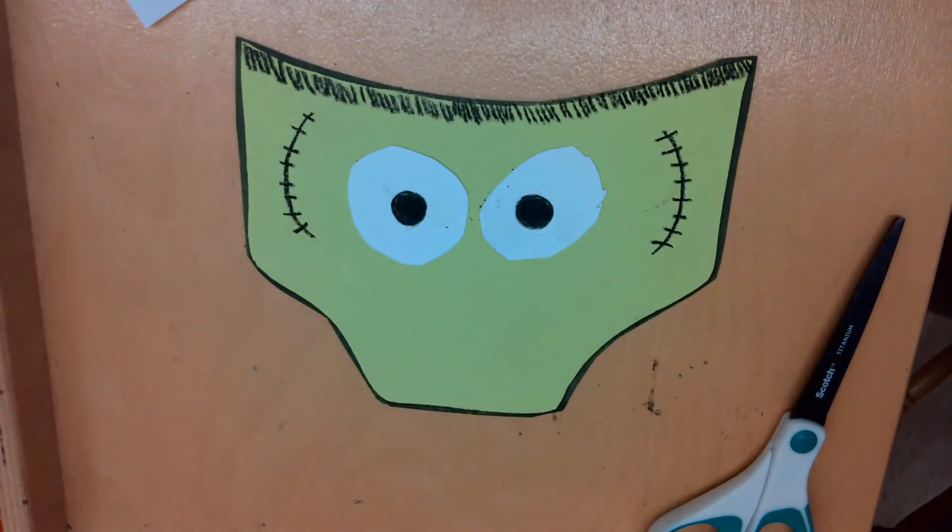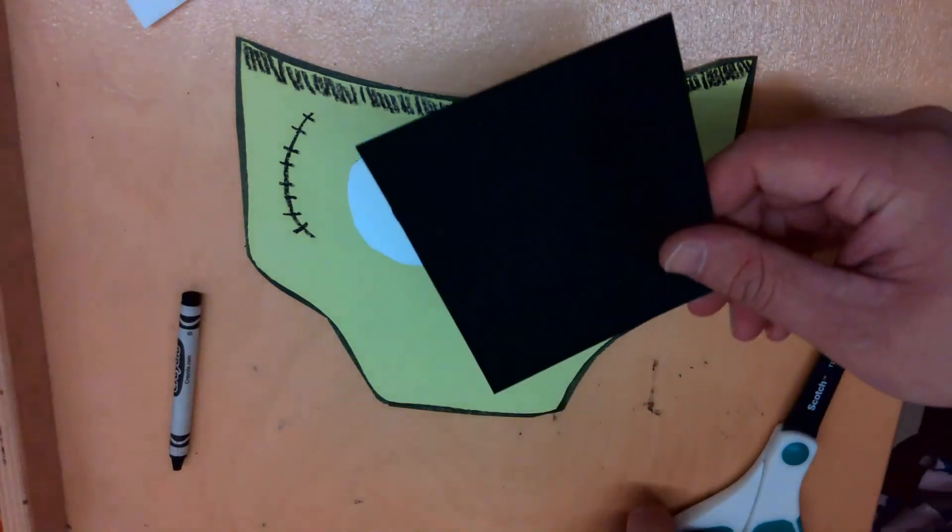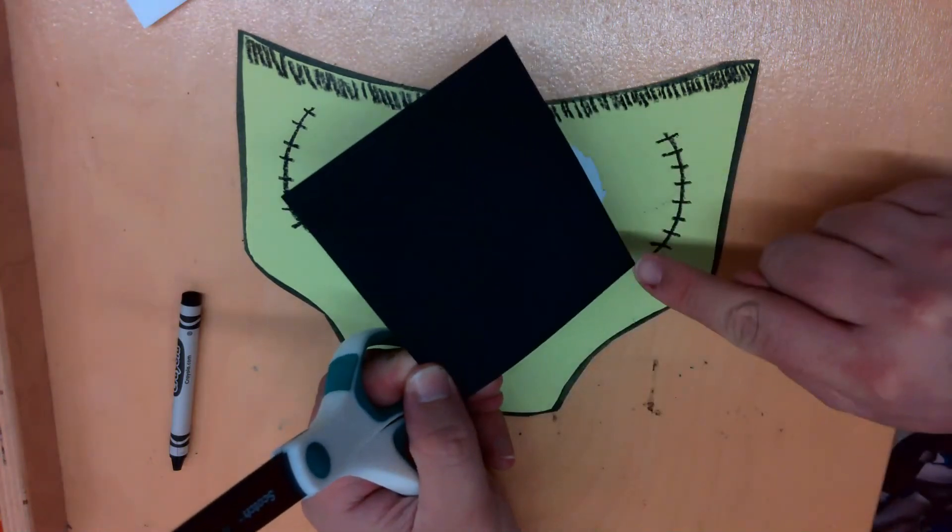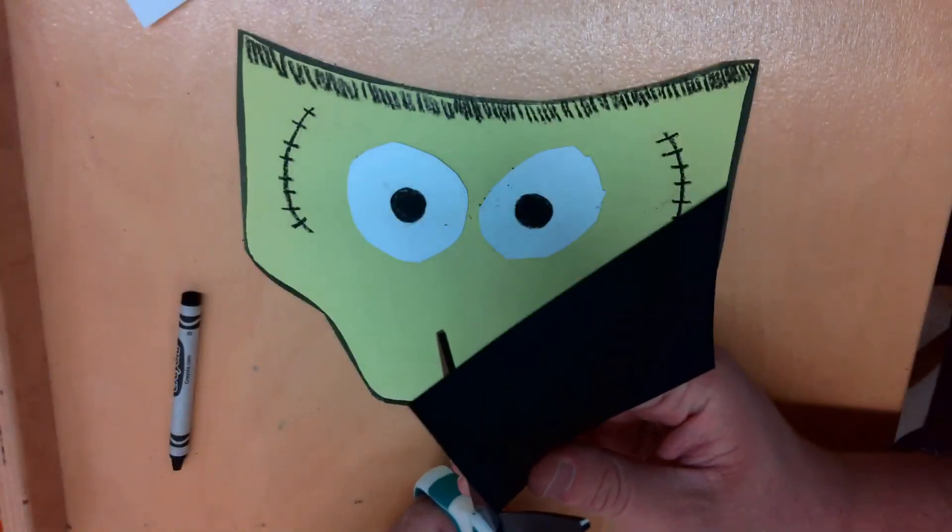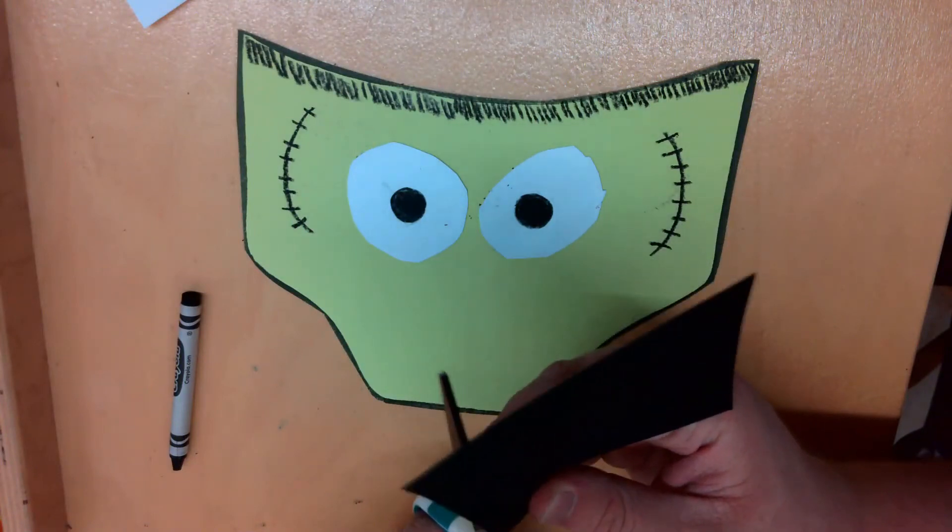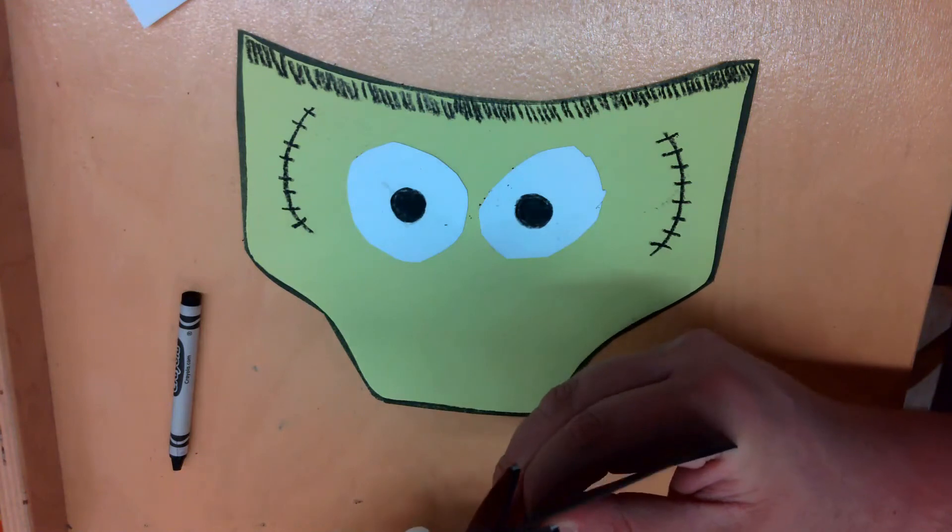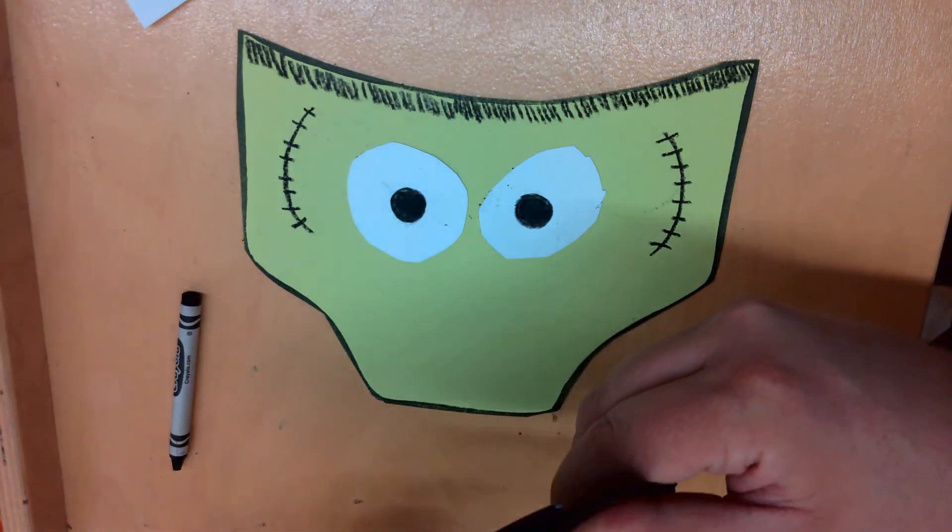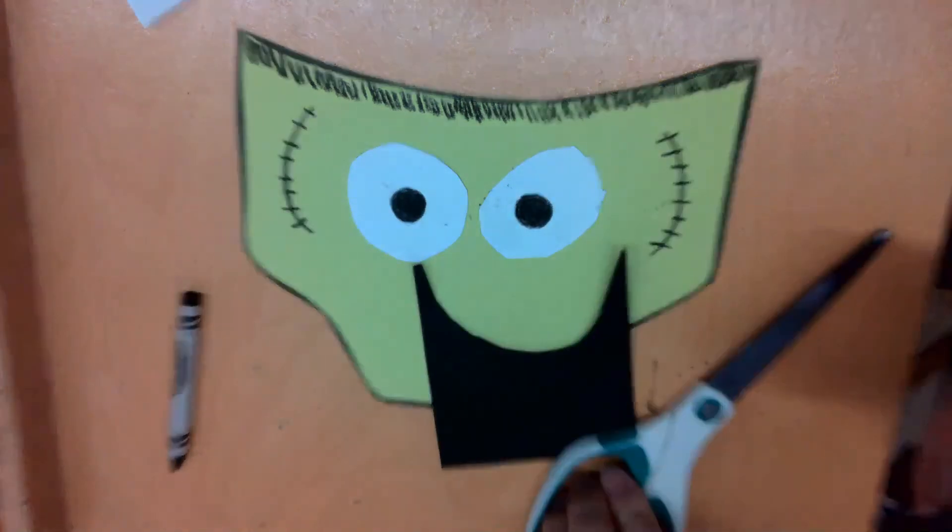Okay, up next, we are going to take our black paper. And we're going to cut a big rainbow curve from one end to the other. We're going to use this to make our creepy pair of underwear's mouth. And we have two choices here.